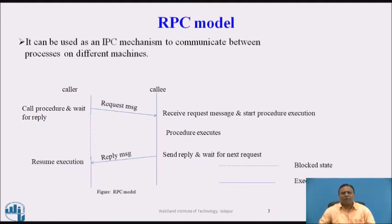This is the figure of the RPC model in which the left-hand side shows the caller and the right-hand side shows the callee. The caller calls the procedure and waits for the reply, sending the name of the method and the parameters in the form of a request message to the callee.